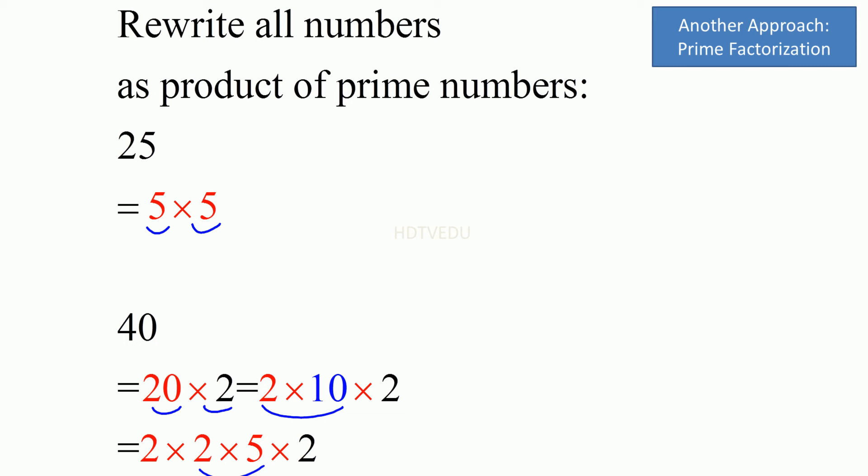In 25, we have 2 5s. In 40, we have 3 2s and 1 5. So what is the maximum number of 2s that you see? 3 2s, right? So we have 1, 2, 3. 3 2s. So 2 times 2 times 2. And what is the maximum number of 5s that you see? 1 and 2 times 5 times 5. So what is that? So the LCM is 200.